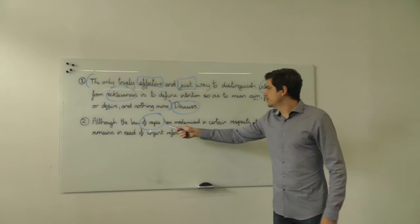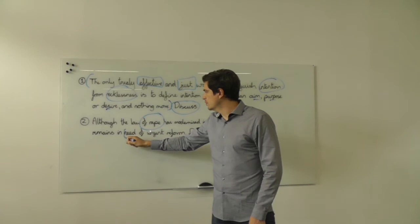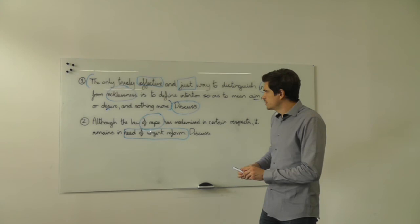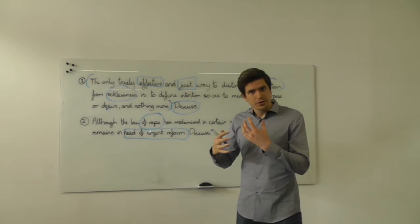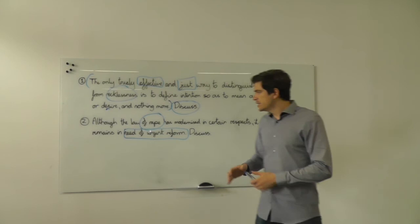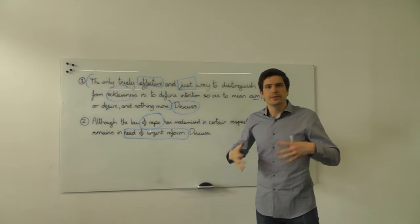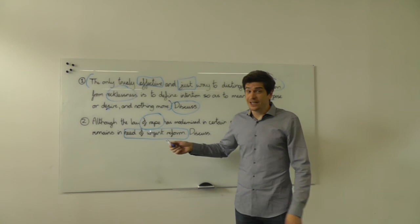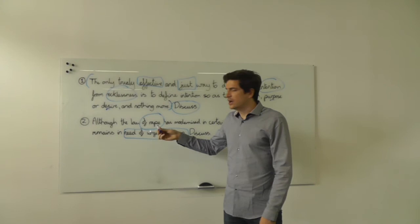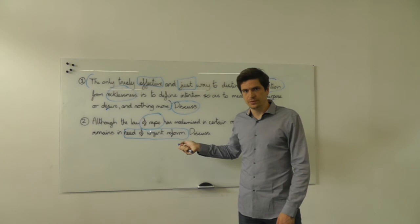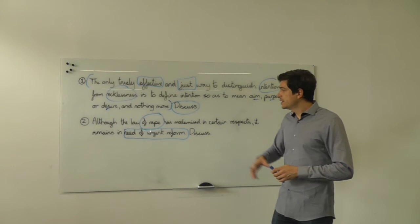The second question: 'Although the law of rape has modernised in certain respects, it remains in urgent need of reform. Discuss.' The first half of the sentence is uncontroversial — in the 2003 Act, the law of rape has modernised, so there's no clash there. But the second half — 'urgent need of reform' — is where the clash is. If you saw this and simply thought about the topic, you would write an essay about what rape is and the elements of that offence. But I'm not asking for a textbook analysis; I'm asking specifically about the issue of reform, and that should be the structure of your essay.